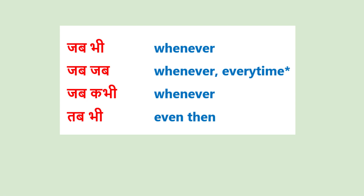In this video number 54 of Learn Hindi the Easy Way with J, we are going to see some interesting word expressions: jab bhi, jab jab, jab kabhi — all meaning 'whenever' with slight, subtle differences in meaning, though they are used interchangeably. There is also tab bhi, meaning 'even then'. Pay attention to the different letters and sounds, such as kabhi where the sound is bhi. You can check the playlist to understand the transliteration and pronounce the words correctly.